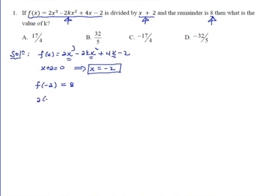2 times minus 2 cubed, minus 2k times minus 2 squared, plus 4 times minus 2, minus 2 is equal to 8.